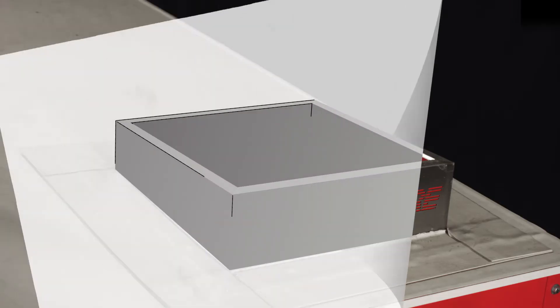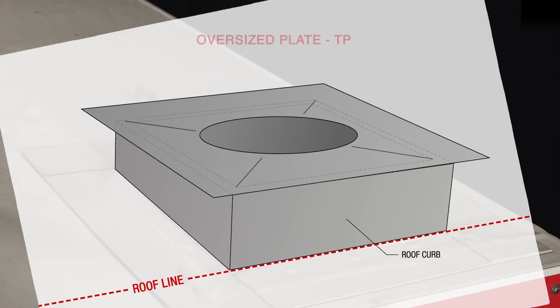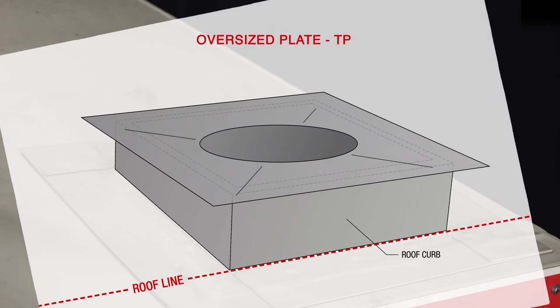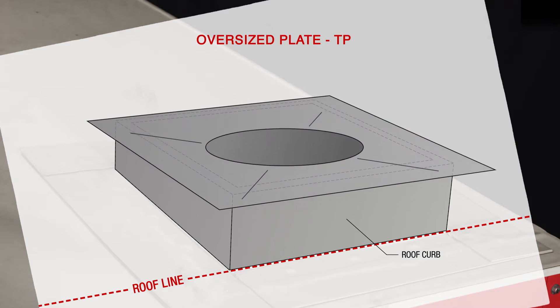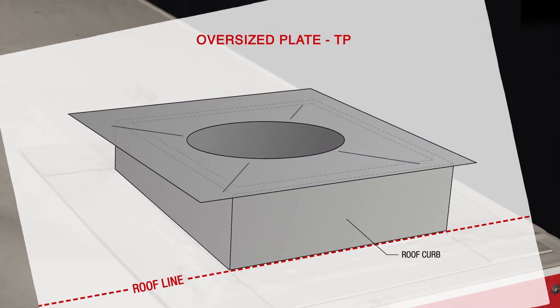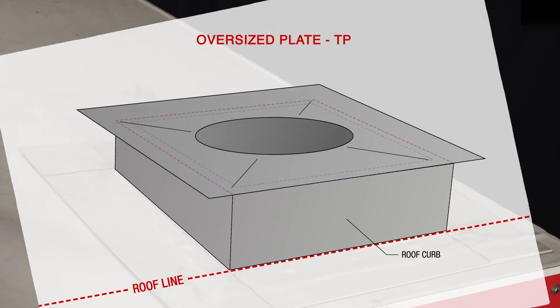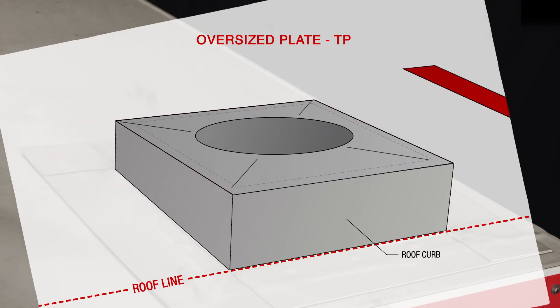To install an oversized TP plate, first place it on the curb. The plate can be positioned off-center with the curb, provided that the minimum clearance to combustibles is maintained. Once in place, you must trim off the excess plate material to allow for fan placement.